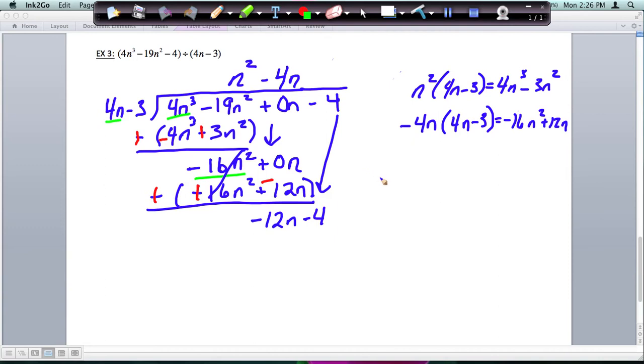And we're going to do the same thing again. What do I need to multiply 4n by to get negative 12n? And I need to multiply by a negative 3. So I'm going to do that multiplication over here, and I get negative 12n plus 9.